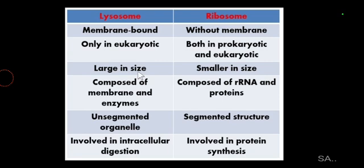If you consider size, lysosomes are larger in size, with their size varying from 0.1 to 0.5, up to 1.2 micrometers. However, ribosomes are smaller in size, and their size is from 20 to 30 nanometers.